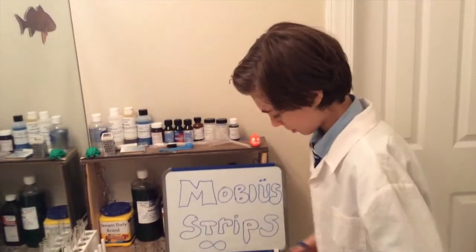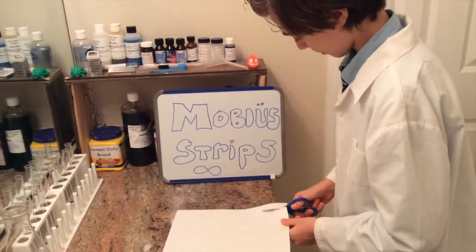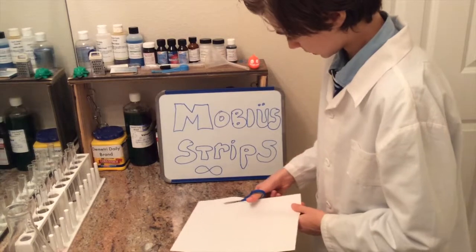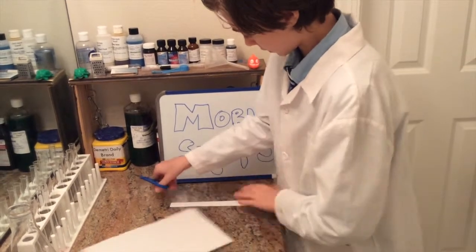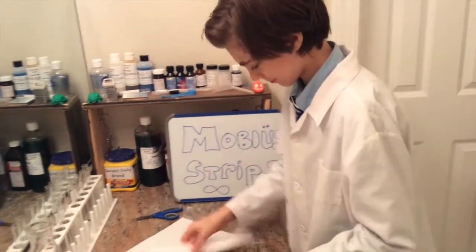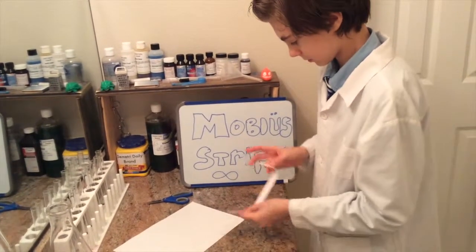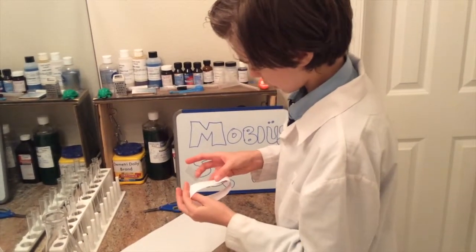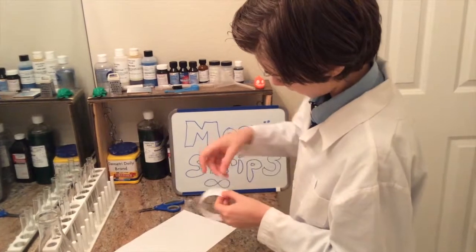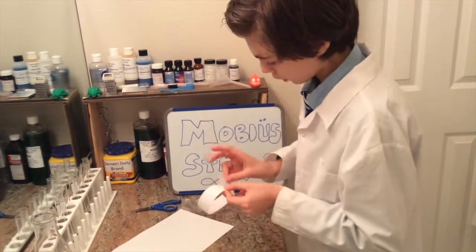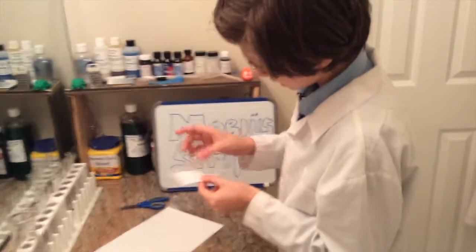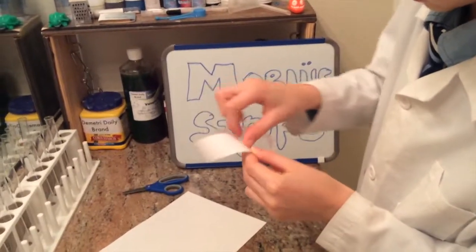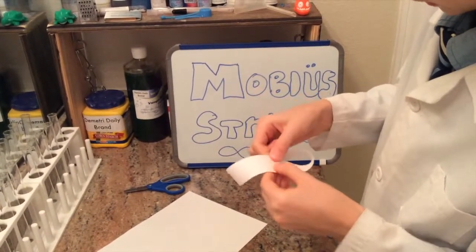To show you what I mean, let's make one. Here's how you do it. What you're going to do is cut a strip of paper like this. And you'll take it, get a little piece of tape, and this is how you would normally make a loop, by putting your tape here. But this time, we're going to give it a half twist before we tape it, like that. And that is a Möbius strip.